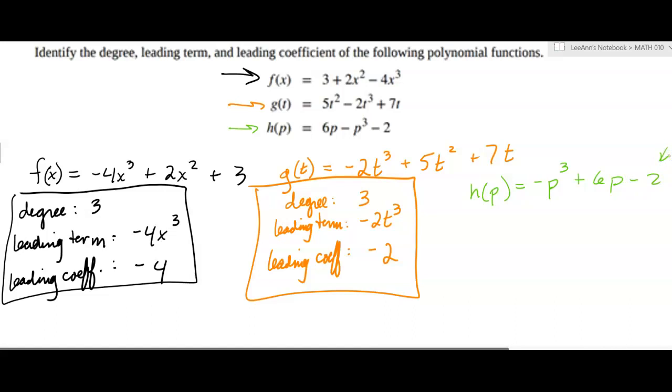Now on g of t, there wasn't a constant, but that's okay. We don't have to have a constant. The important thing is that we get the highest exponent first.